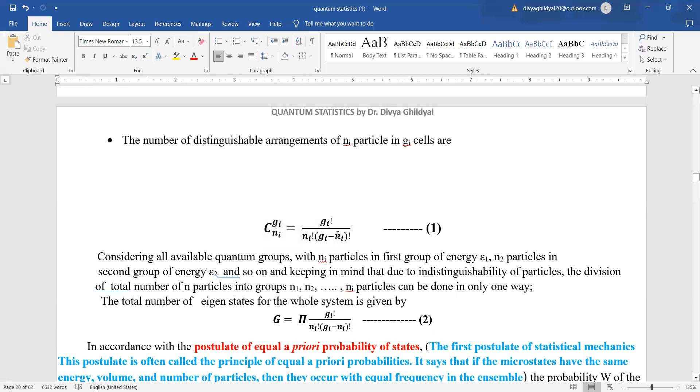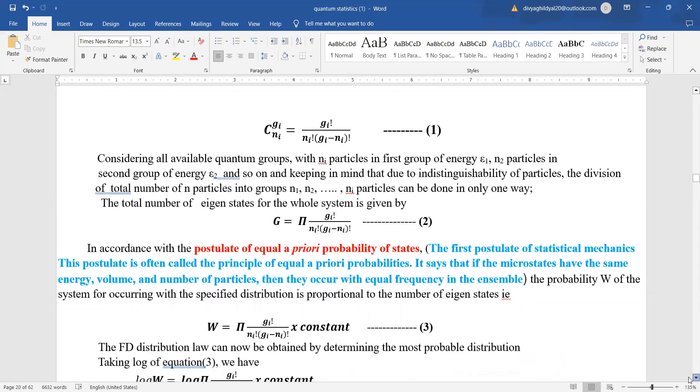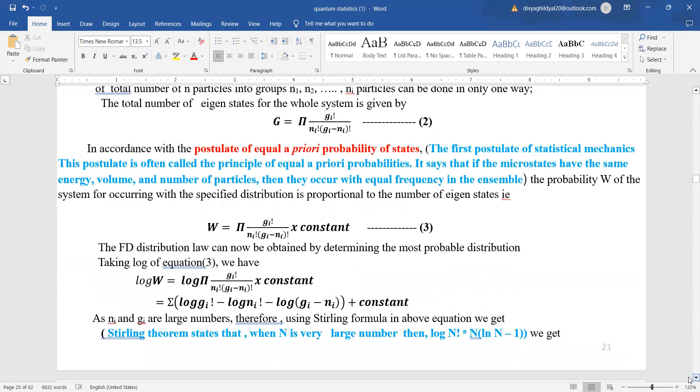Considering all available quantum groups with ni particles in first group of energy epsilon 1, n2 particles in second group of energy epsilon 2, etc., the total eigenstate for the whole system will be given by this symbol, the product: gi factorial upon ni factorial into gi minus ni factorial.